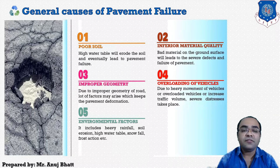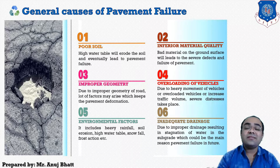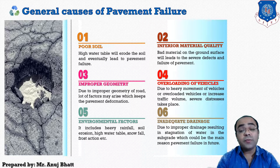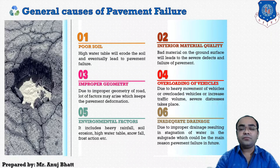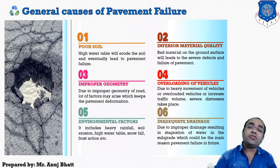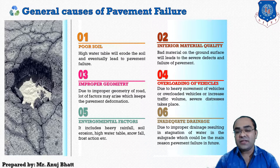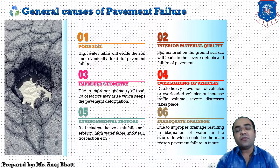The next cause is inadequate drainage. Improper drainage results in stagnation of water in the subgrade, which could be the main reason for pavement failure in future. These are the main general causes of pavement failure, affecting both rigid and flexible pavements. Further, we will see in detail the specific causes of flexible pavement and rigid pavement failure.